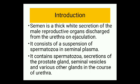Semen has two components — a fluid component and sperm. The fluid component is produced by various male reproductive organs. For example, the seminal vesicles produce a slightly alkaline fluid that constitutes 50% of seminal fluid. It contains citric acid, fructose, flavins, and potassium.